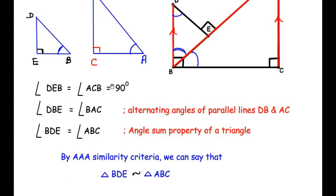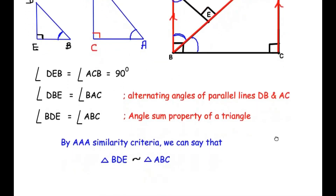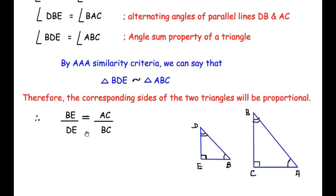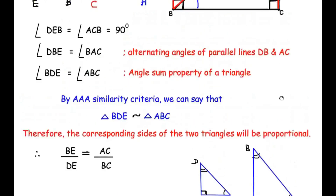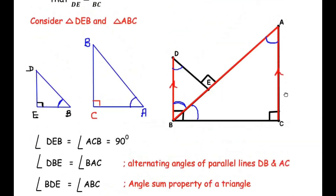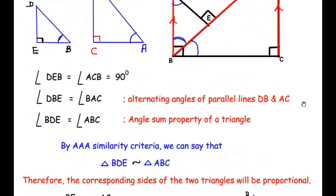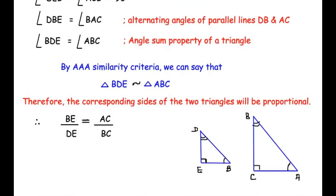Since the triangles are similar, their corresponding sides are proportional. Redrawing the two triangles and writing the sides, the corresponding sides give us BE over DE equals AC over BC — which is exactly what we had to prove. Using the similarity criterion, we have proved that the sides of the two triangles are proportional.